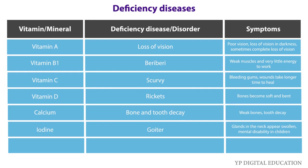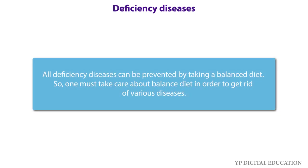Iodine: the deficiency disease due to lack of iodine is goiter. Symptoms include swollen glands in the neck and mental disability in children. Iron: the deficiency disease due to lack of iron is anemia, with weakness as the main symptom.